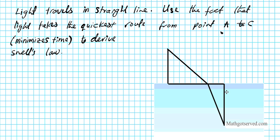It says light travels in a straight line as we all know. Use the fact that light takes the quickest route from point A to C — this is point A in this diagram and this is point C — so use the fact that light takes the quickest route from A to C, basically minimizing time, to derive Snell's Law.